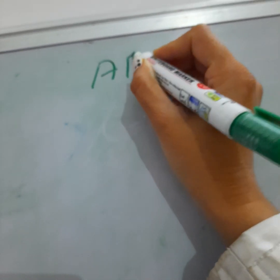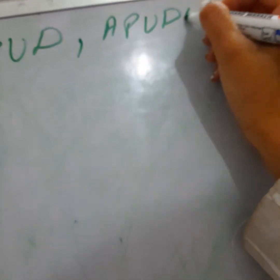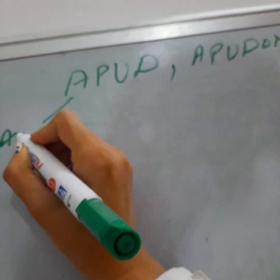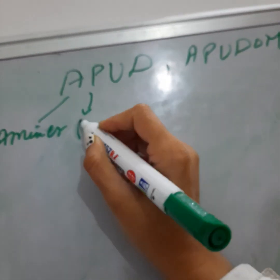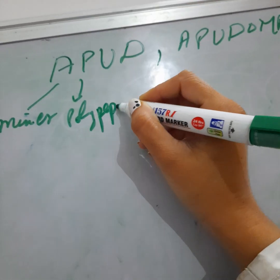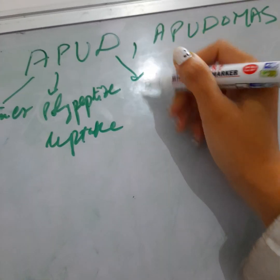In today's video we will discuss APUD cells and APUDomas. APUD stands for Amines, Polypeptide Uptake, and Decarboxylase.